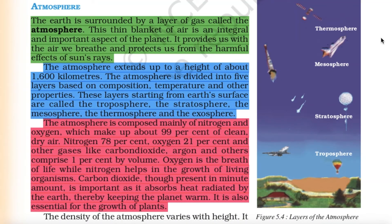Atmosphere: The earth is surrounded by a layer of gas called the atmosphere. This thin blanket of air provides us with the air we breathe and protects us from the harmful effects of the sun's rays. The atmosphere extends up to a height of about 1,600 kilometers and is divided into five layers: the troposphere, the stratosphere, the mesosphere, the thermosphere and the exosphere. The atmosphere is composed mainly of nitrogen (78%) and oxygen (21%), which make up about 99 percent of clean dry air, with other gases like carbon dioxide and argon comprising the remaining one percent.